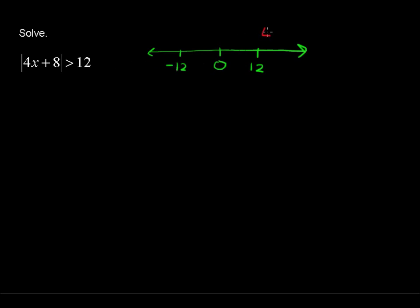Well, 4x plus 8 could be greater than 12, and we'll show that right there. It could be greater than 12, but it could also have a distance of 12 units off to the left 12 units. So let's put 4x plus 8 over here and graph that. That's going to set up two inequalities, so let's write those down. Just take it right from the graph there.